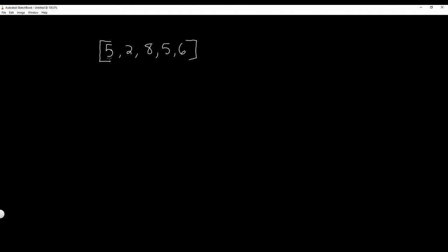We'll go through this example right here. We start traversing through our array, and we start with index 0, or the integer 5. We check: is 5 less than or equal to the integer right in front of it? Well, it's not, so what we have to do is swap these two integers.